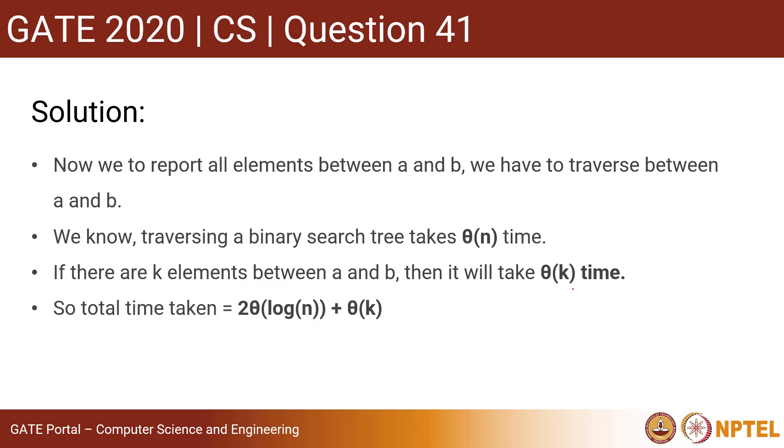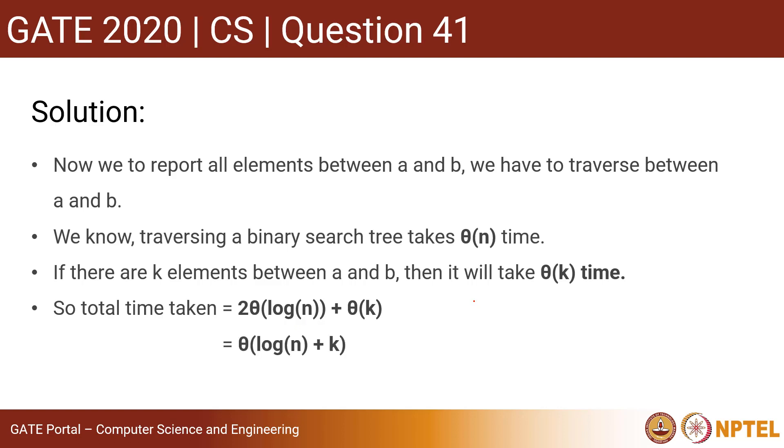So total time taken will be 2 × Θ(log n), this is for finding a and b, plus Θ(k), that is for traversing. So the answer will be Θ(log n + k).